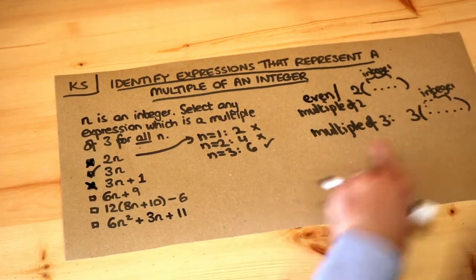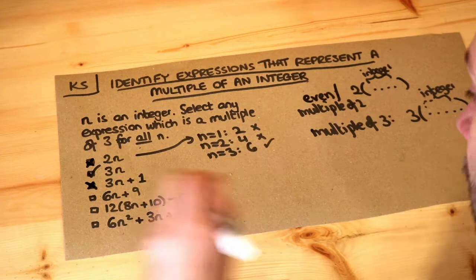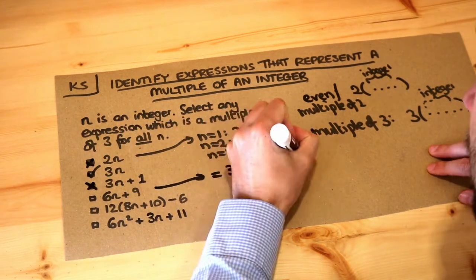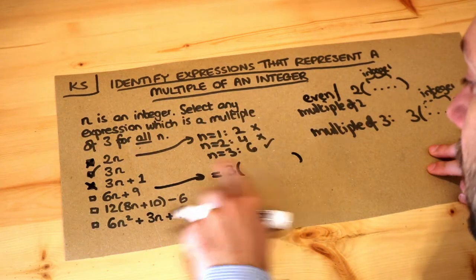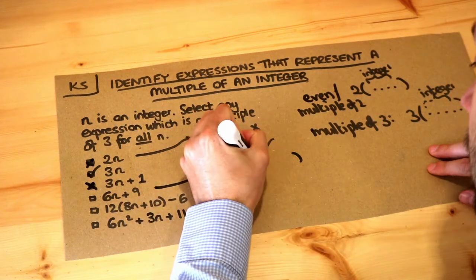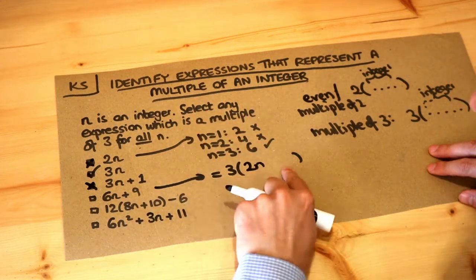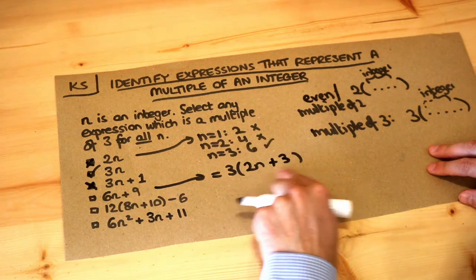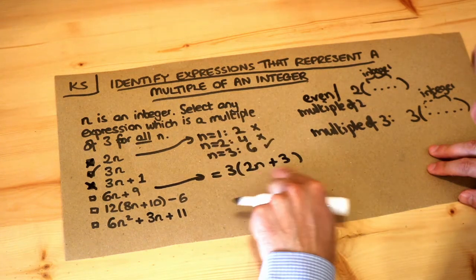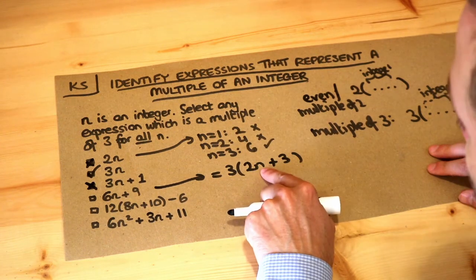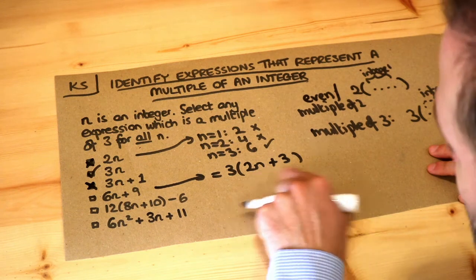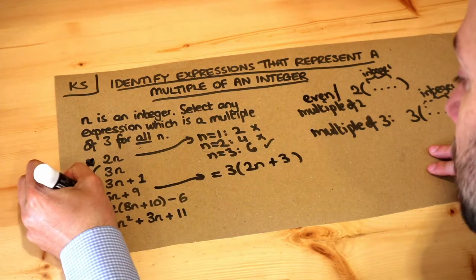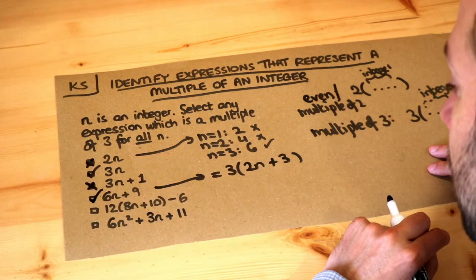Six n plus nine — can we factorize out a three? Yes we can. We get three times two n plus three, because three times two n is six n and three times three is nine. Since whatever whole number we put in for n, two n plus three will be a whole number, this is guaranteed to be a multiple of three.